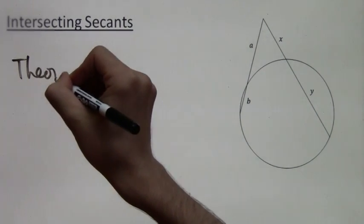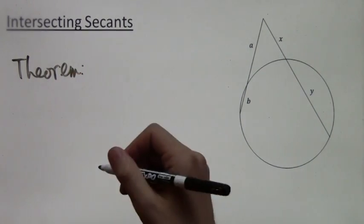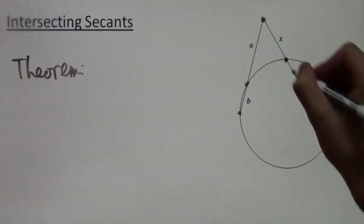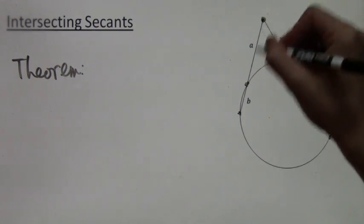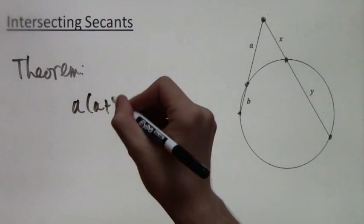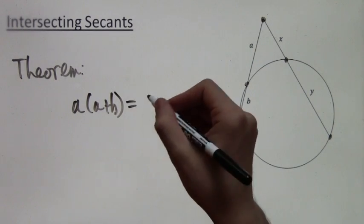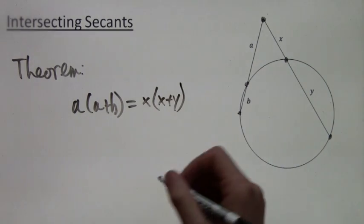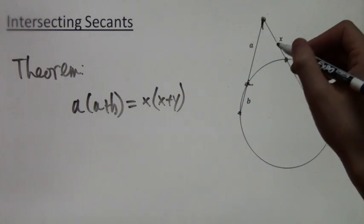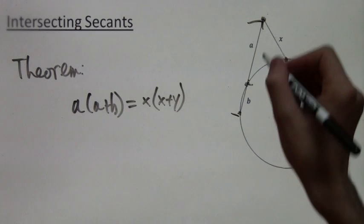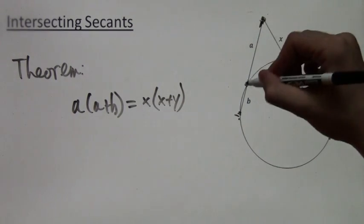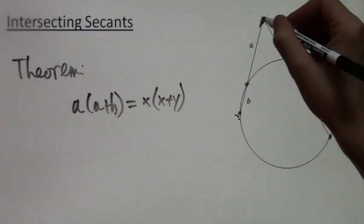In some ways, it's similar to the intersecting chords theorem. The theorem is that if we have two secants like this that intersect on the outside of the circle, then the following holds: a times a plus b is equal to x times x plus y. The short outer portion times the whole portion of the secant is equal to the same thing for the other secant. Small times whole.